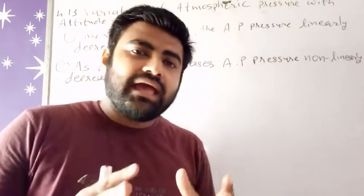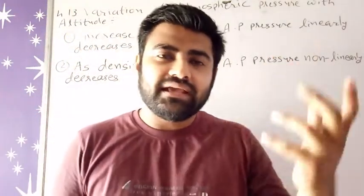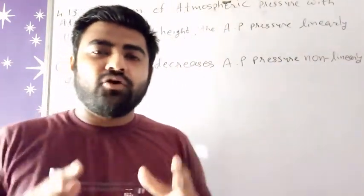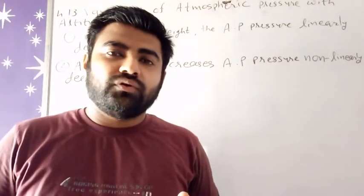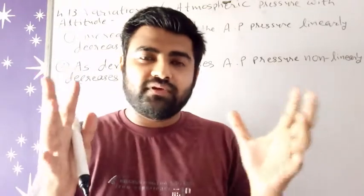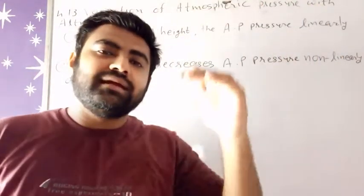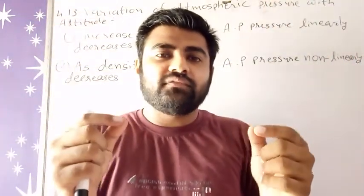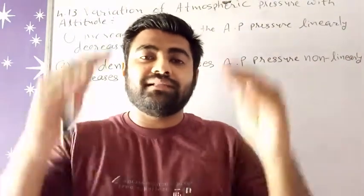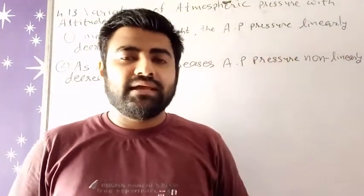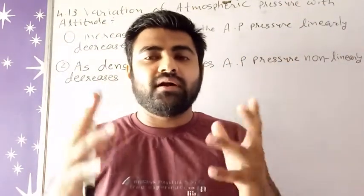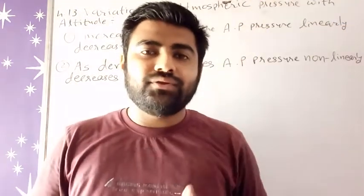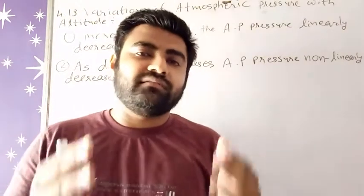What is actually happening in the atmosphere? Suppose we take the first reason: increase of height. Why does pressure decrease as we go up in the atmosphere? We know that the atmosphere extends up to about 300 km at the topmost. When at high altitude, the air column above is less, that's why atmospheric pressure becomes less.